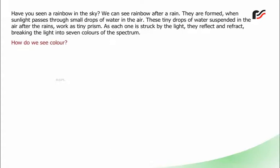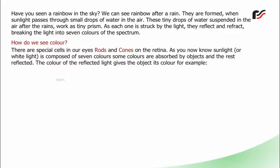How do we see color? There are special cells in our eyes, rods and cones on the retina. As you now know, sunlight or white light is composed of seven colors. Some colors are absorbed by objects and the rest reflected. The color of the reflected light gives the object its color. For example, a red rose reflects back to our eyes only the red color and absorbs the rest.